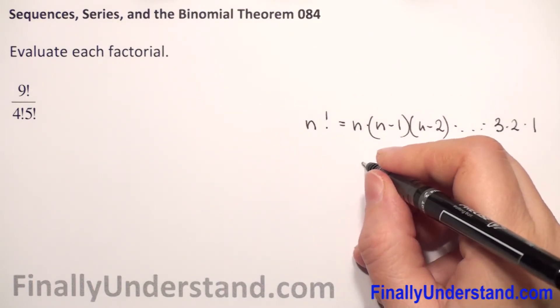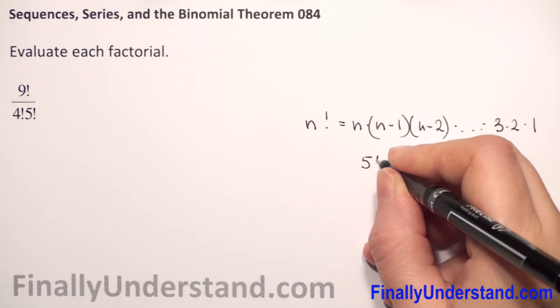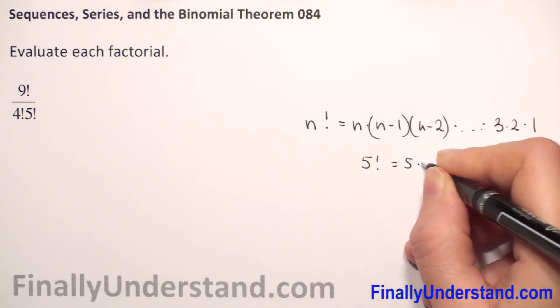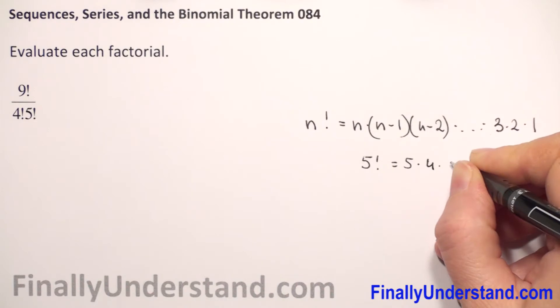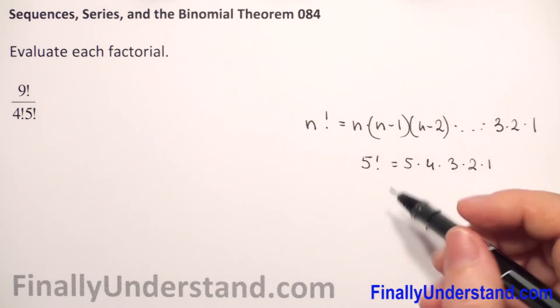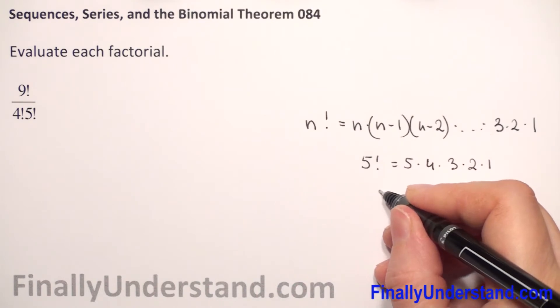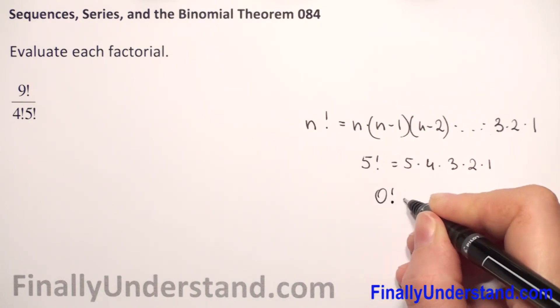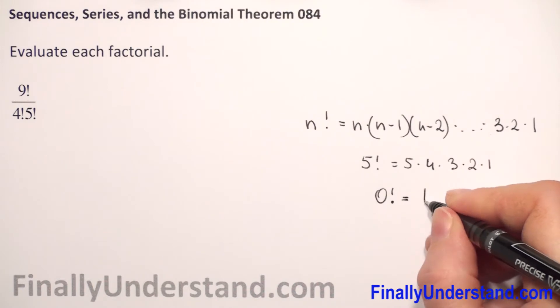For example, when we have 5 factorial, this is 5 times 4 times 3 times 2 times 1. We have to memorize that 0 factorial is defined to be 1.